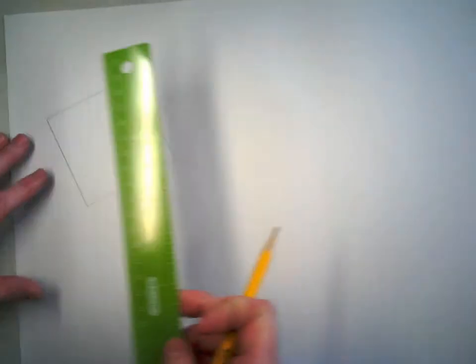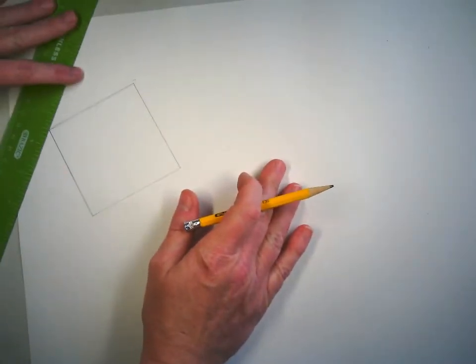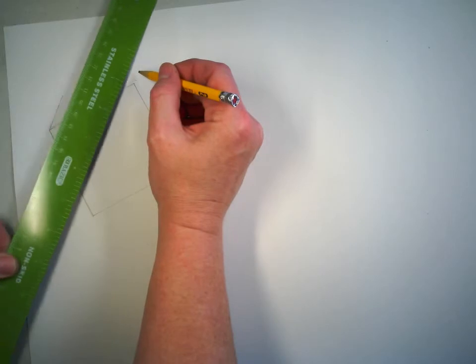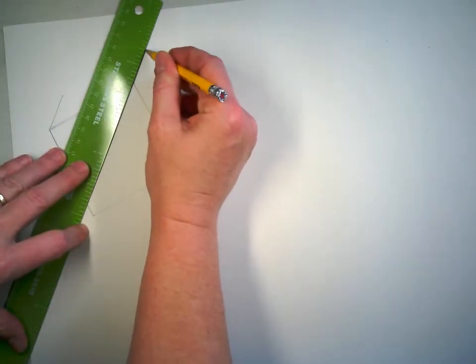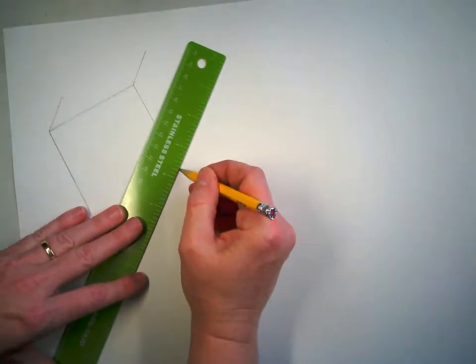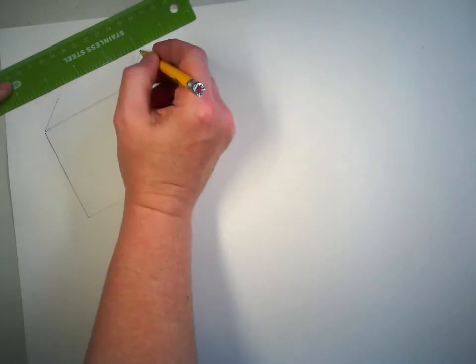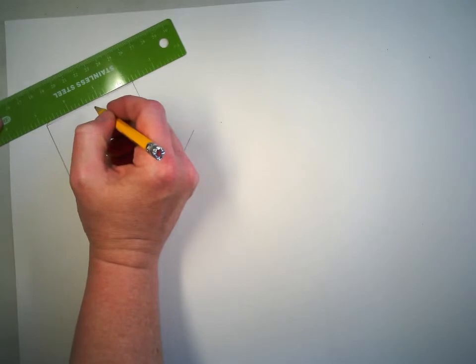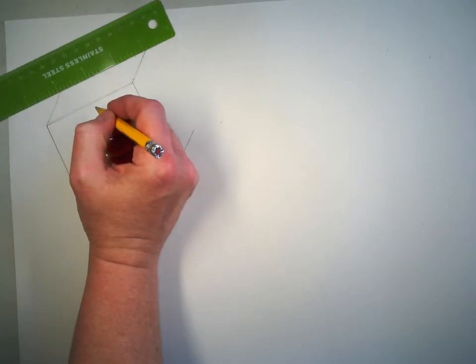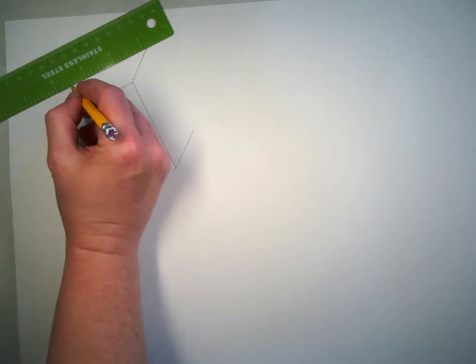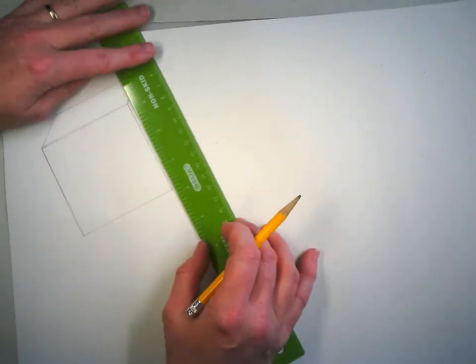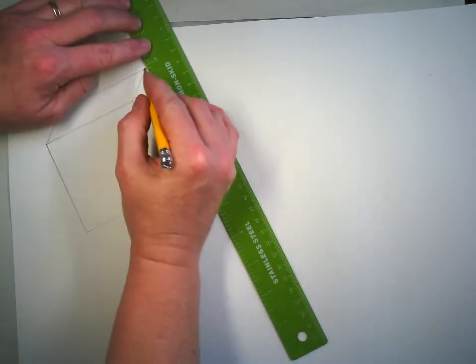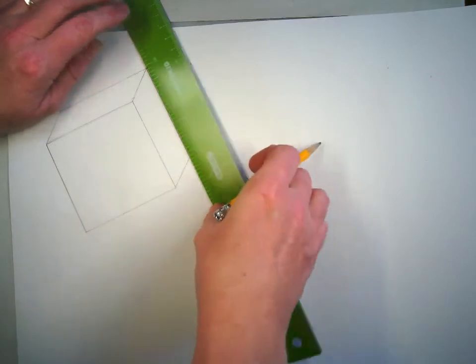And then you're going to draw the 3 parallel lines to show the side, perspective lines on here. And these will probably be about an inch and a quarter, inch and a half long. And then the back edge is always parallel with the front edge. So you want to just pull your ruler straight back. And there you have your cube.